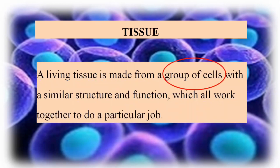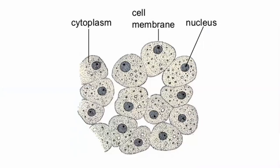So what is tissue? Tissues are basically a group of cells. When the same type of cells — having the same function, the same size, and the same type — combine together, they perform more specialized functions. These groups of cells together are known as tissues.